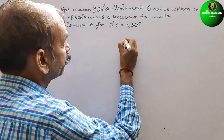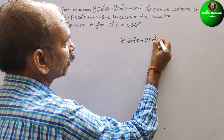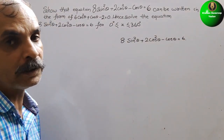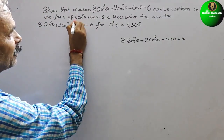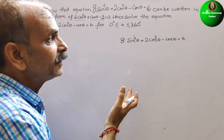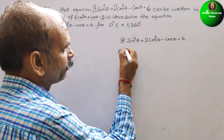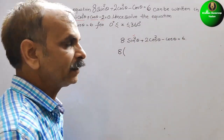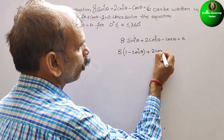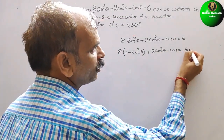Starting with 8sin²θ + 2cos²θ - cosθ = 6. Since sin²θ = 1 - cos²θ, we substitute to get 8(1 - cos²θ) + 2cos²θ - cosθ, and bring the 6 to the left as minus 6, giving us the expression equal to 0.